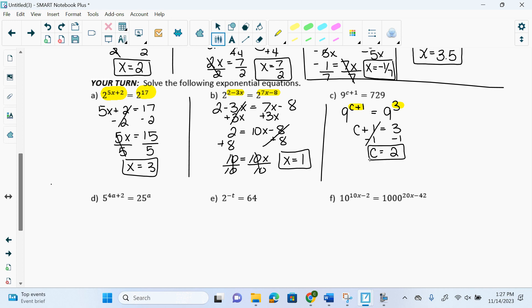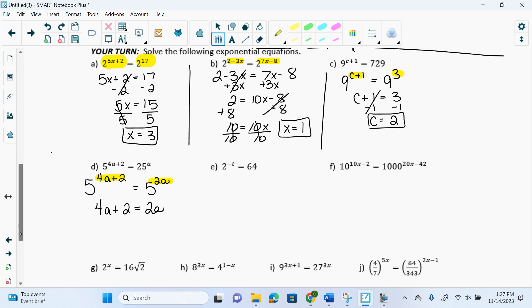This one I can make them both be base 5. You always make them be the smaller base. So this one's 5 to the 4a plus 2. And 25 is 5 to the 2. And then it joins that exponent, 2a, because they multiply. So then I have this exponent equals this one. So I get 4a plus 2 equals 2a. Subtract my 4a over. And I get 2 equals negative 2a. Divide by negative 2. a equals negative 1.